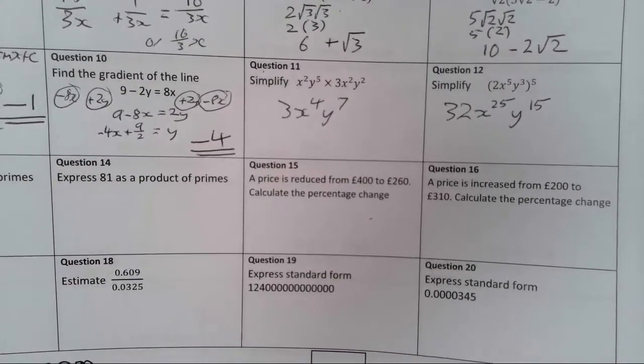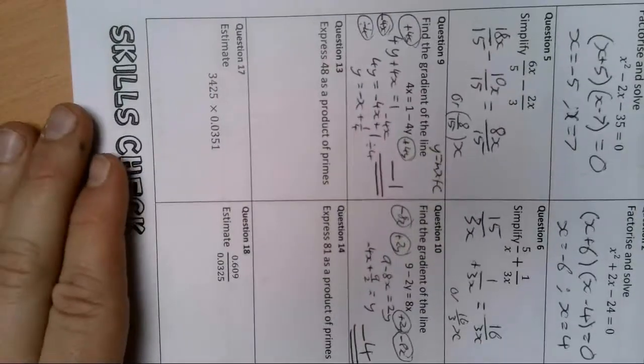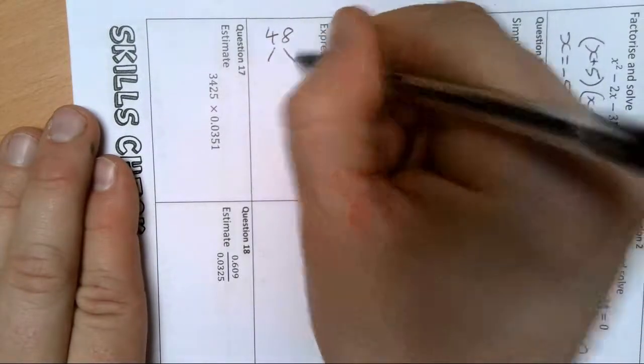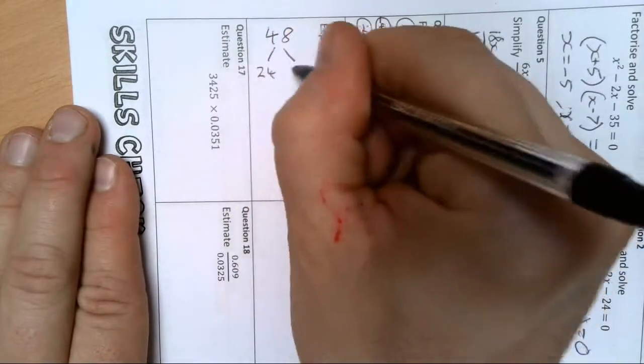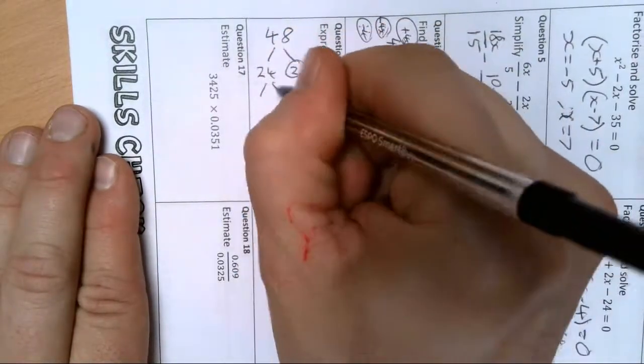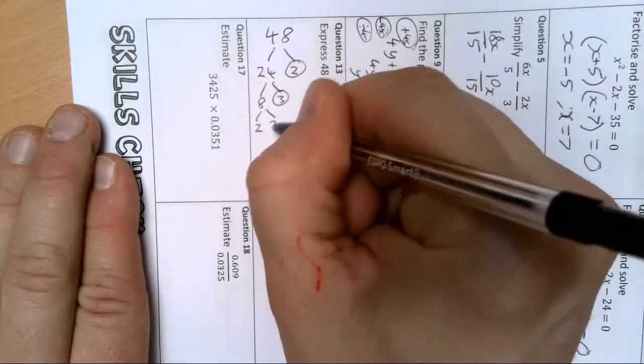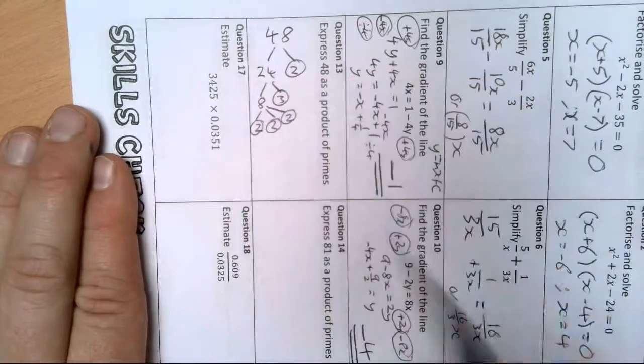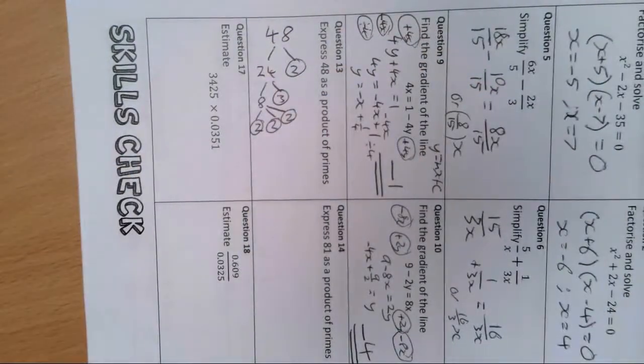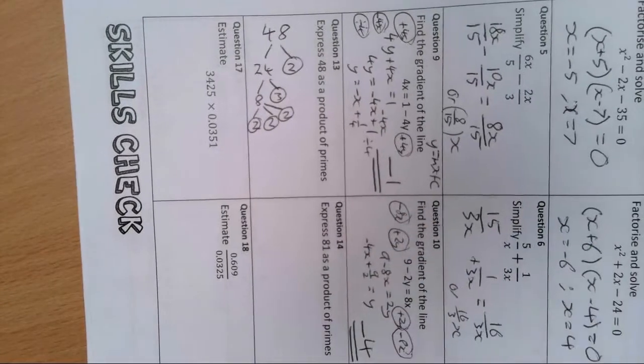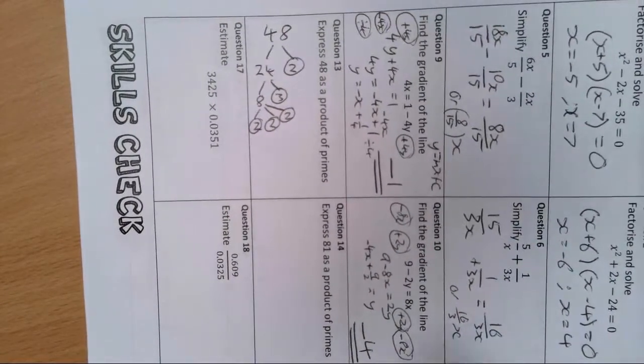Express 48 as a product of primes. I'm going to turn the paper around to do a quick tree. So 48, let's go for 24 times 2. 2 is a prime, let's go for 8 times by 3. 3 is a prime, and 2 times 2 times 2. So that's going to give me 2 to the power 4 times by 3.